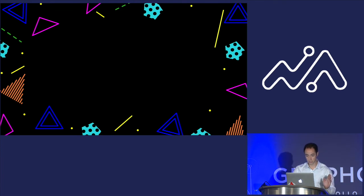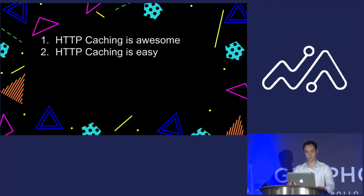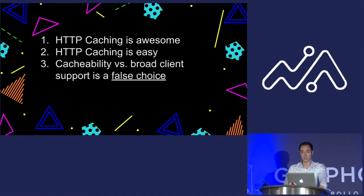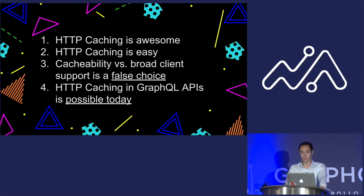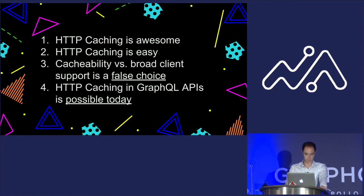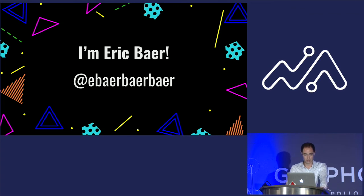So what did we learn? We learned that HTTP caching is awesome and easy, and that we can do it. We learned that cacheability versus broad client support is a false choice, and that HTTP caching in GraphQL APIs is possible today. This whole mess about hand-implemented caching — you can take at least some of that off the table. Thank you all for coming out, and thank you to the organizers — this was a great event.